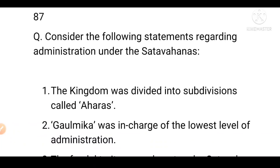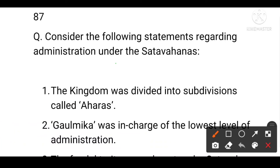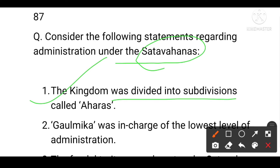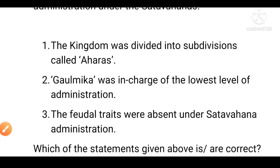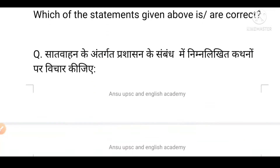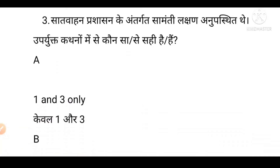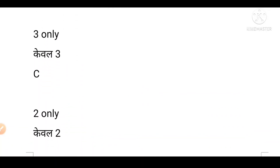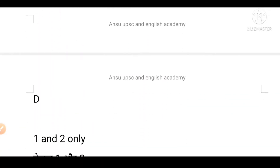Next question: Consider the following statements regarding administration under the Satavahanas. First, the kingdom was divided into subdivisions called Ahara. Second, the Grama (village) was the lowest level of administration. Third, feudal practices were absent under the Satavahanas. Options: A is first and third, B is third only, C is second only, D is first and second.